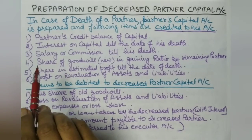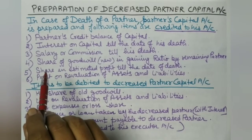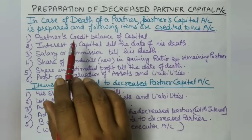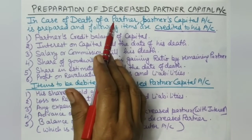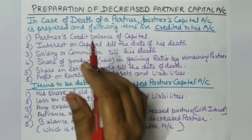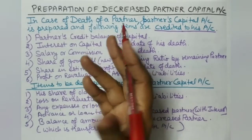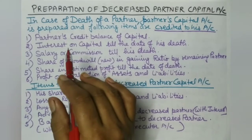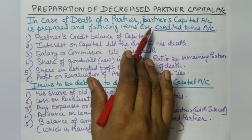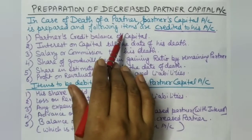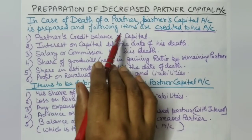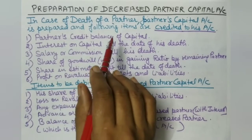After understanding the accounting process, let's look at how the deceased partner's capital account is prepared. In the case of death of a partner, we do not wait until year-end. We immediately prepare the capital account and make the payments. The following items are credited to the deceased partner's capital account. First, we credit the opening credit balance of the capital account as shown in our balance sheet.